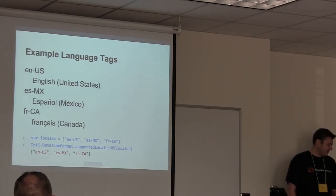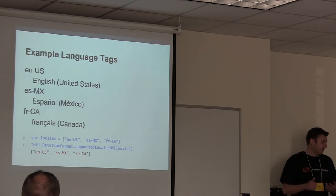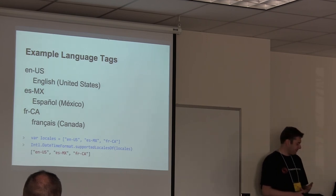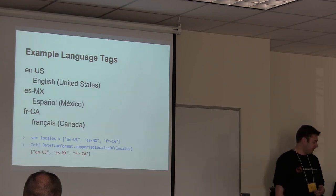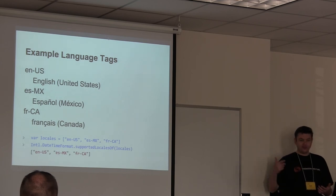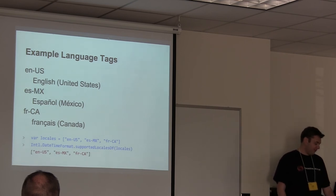Here are some real example language tags. In the US we've seen EN-US all the time. ES-MX is Español from Mexico, and FR-CA is Français for Canada. I went on the Chrome console and typed in a locale check, because Chrome supports this. I passed in an array of those locales asking which ones are supported, and all three came back supported — not surprisingly.